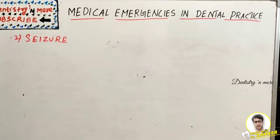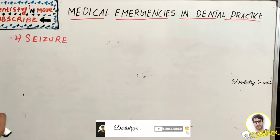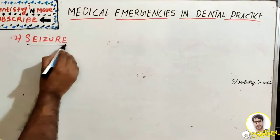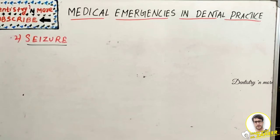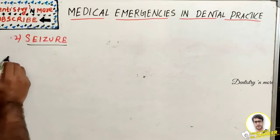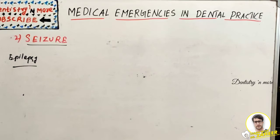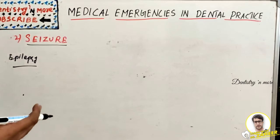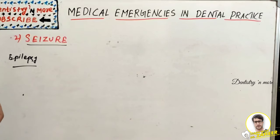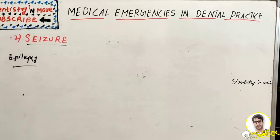Seizure is a paroxysmal disorder of cerebral function characterized by an attack involving changes in the state of consciousness, motor activity, or sensory phenomena - usually with sudden onset and brief duration. Epilepsy is a chronic disorder in which nerve cell activity in the brain is disturbed, causing seizures. Seizure symptoms include blank staring, chewing, fumbling, wandering, shaking, and confused speech.